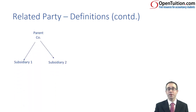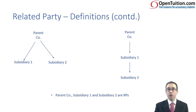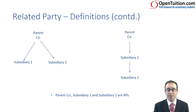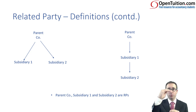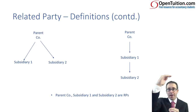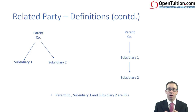We've seen examples within group accounts where we've had more than one subsidiary, and complex groups with a parent, sub and sub-sub. All of those parties are related — the parent, sub one and sub two are all related parties because sub one and sub two are under control of the parent directly. In the complex vertical group structure, subsidiary two is under control of subsidiary one, and the parent also has effective control over subsidiary two. So they are all related parties. Subsidiary two would need to disclose subsidiary one as its parent company and the parent company as the ultimate parent company within its disclosure notes.